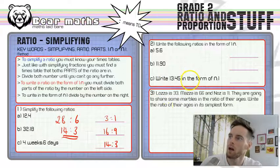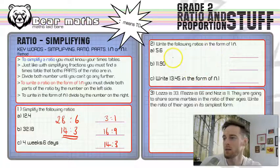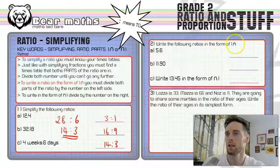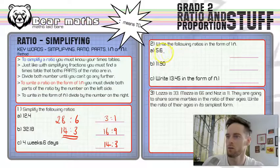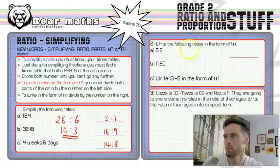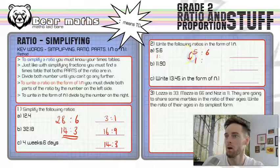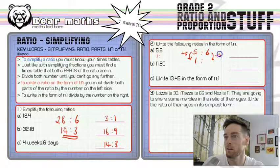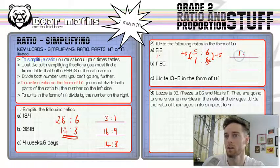Question two: write the following ratios in the form one to n. This is actually even simpler — it's just a way of comparing something to one. All we have to do is divide by the number on the left-hand side, because that's the side we want to be a one. For 5 to 6: 5 becomes 1 by dividing by 5, so we divide 6 by 5 as well, giving us 6 over 5. So the answer is 1 to six-fifths.